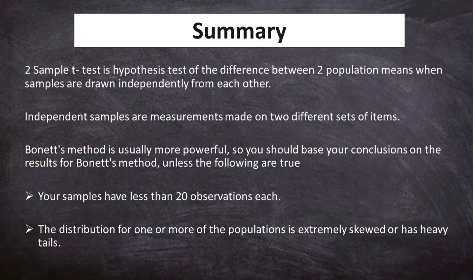To summarize: two-sample t-test is the hypothesis test of the difference between two population means when samples are drawn independently from each other. Independent samples are measurements made on two different sets of items. Bonnet's method is usually more powerful, so you should base your conclusions on Bonnet's method, unless your samples have less than 20 observations each or the distribution is extremely skewed or has heavy tails.